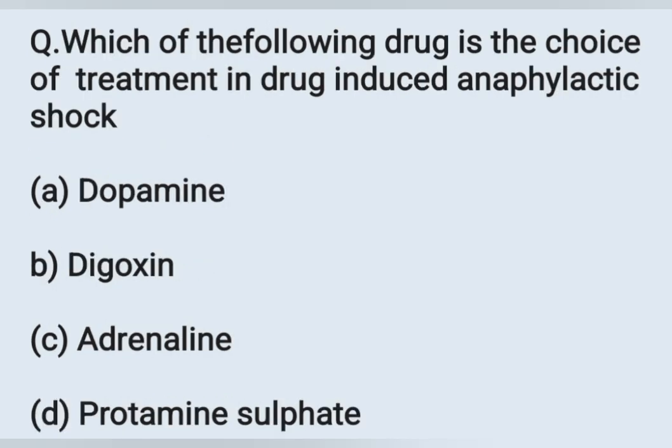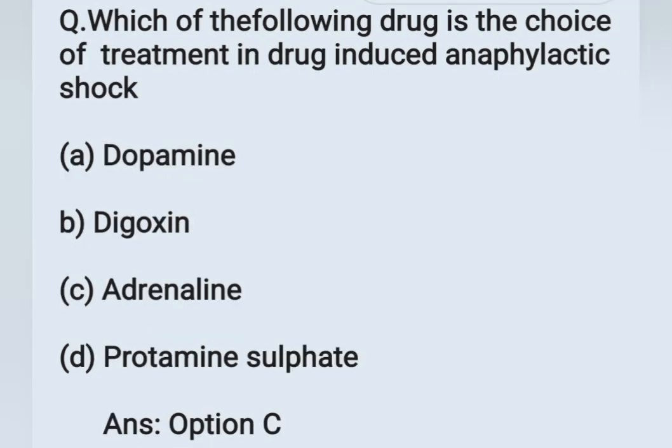The next question: which of the following drugs is the choice of treatment in drug-induced anaphylactic shock? Options: A - dopamine, B - digoxin, C - adrenaline, D - protamine sulfate. The drug used for anaphylactic shock or anaphylactic reaction is adrenaline. Option C is the correct answer.